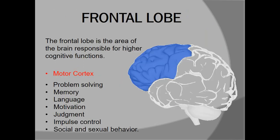The frontal lobe is the area of the brain responsible for higher cognitive function. We have the motor cortex here, so the motor component of the brain is part of the frontal lobe, and all movements of the body are controlled from here. The frontal lobe also controls problem solving, memory, language, motivation, judgment, and different kinds of social behaviors.